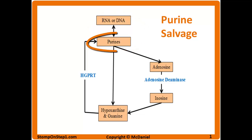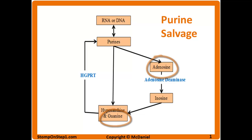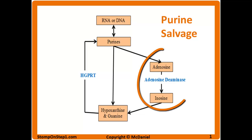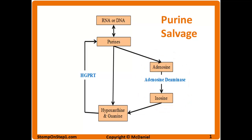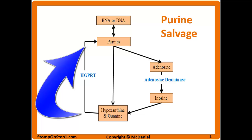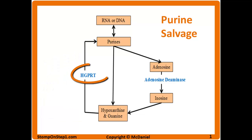These purines, which you can see on the flowchart, are going to have the sugar and phosphate groups removed from them to give you adenine and guanine. Adenosine then goes through an extra step and is converted to the intermediate inosine. When needed, inosine and guanine are recycled by the enzyme hypoxanthine guanine phosphoribosyltransferase, or HGPRT. This enzyme recycles guanine and inosine to give you back new purines, which can then be incorporated into new DNA and RNA.